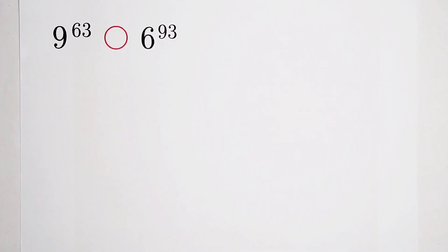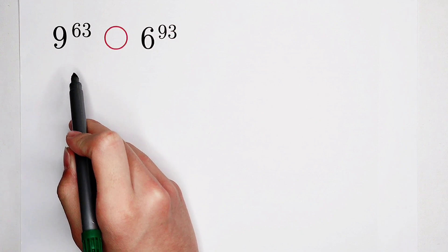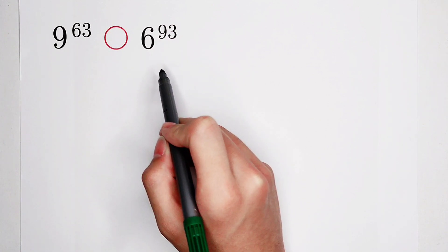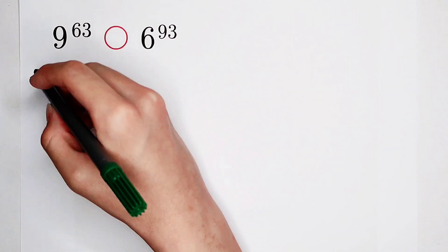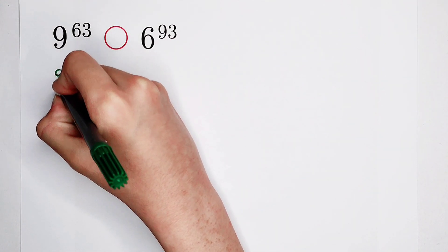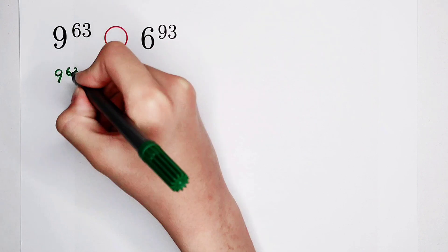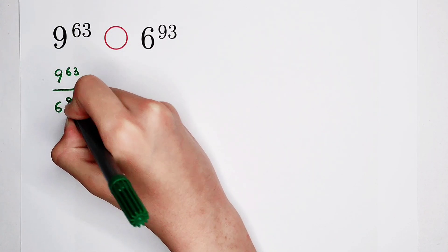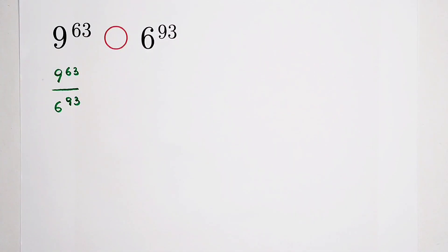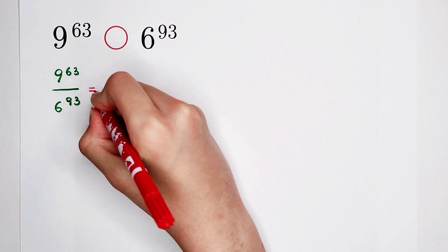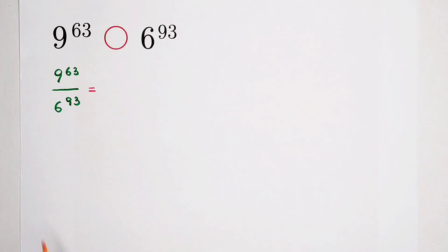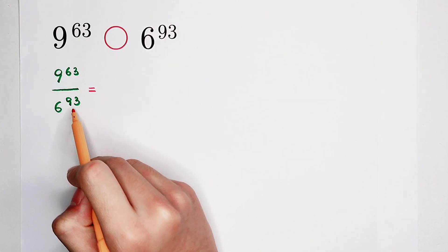Now, 9 to the power of 63 and 6 to the power of 93. I'm going to divide the left-hand side by the right-hand side: 9 to the power of 63 divided by 6 to the power of 93. Looking at the exponents, you can find that they are both divisible by 3, but it won't work since they are so large.